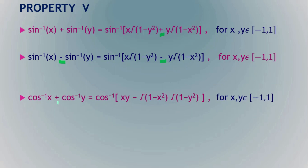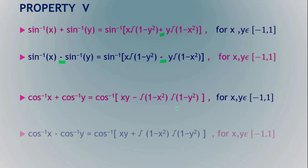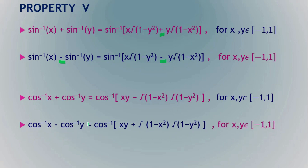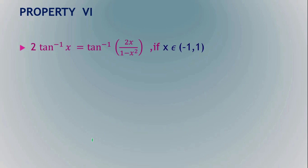For cos⁻¹(x) + cos⁻¹(y), the formula is cos⁻¹(xy − √(1 − x²)·√(1 − y²)). For cos⁻¹(x) − cos⁻¹(y), the formula is the same except the sign changes — where it is negative it becomes positive.